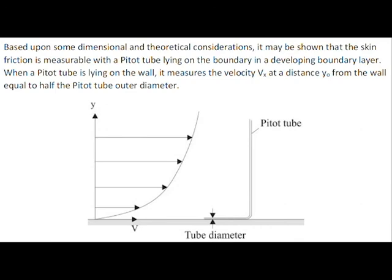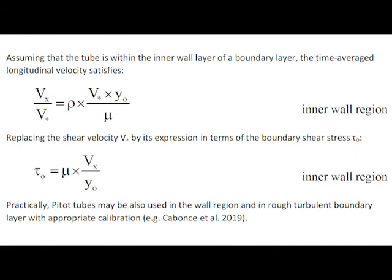Based upon some dimensional and theoretical considerations, the skin friction may be measured with a pitot tube lying on a boundary. When the tube is within the inner wall layer of a boundary layer, an analytical expression can be derived, linking the boundary shear stress to the velocity.